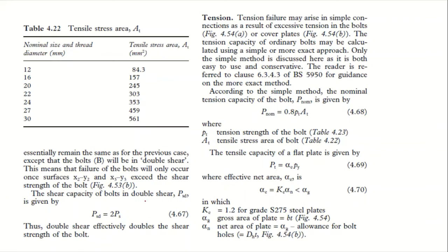For bolts in double shear, since you have two areas back to back, multiply by two. For tension, the nominal tension capacity uses pt (tension strength of the bolt from clause 4.23) multiplied by As (tensile stress area from Table 4.22). The tensile capacity of the flat plate is given by a formula involving py.